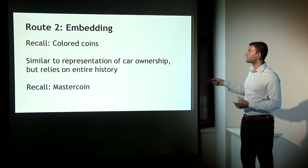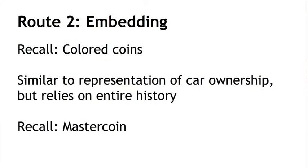Now let's move to the second possible route: embedding. Embedding still uses the actual Bitcoin blockchain, but comes up with some sort of arbitrary, possibly quite complex representation scheme for encoding different real-world semantics into the Bitcoin blockchain. One example is colored coins, which is somewhat similar to the representation of car ownership and transfer we saw in the smart property example, but a bit more elaborate.